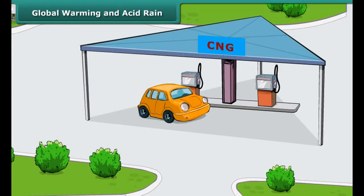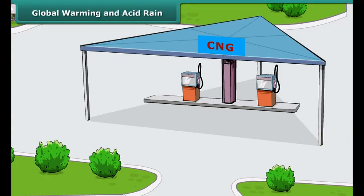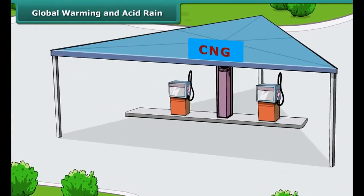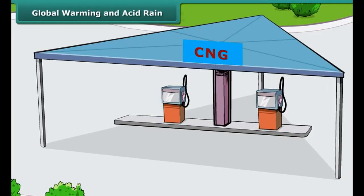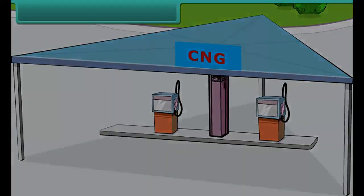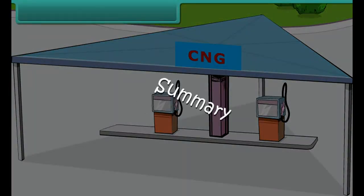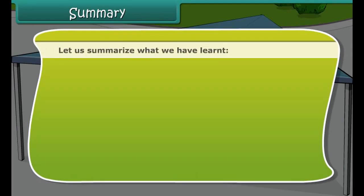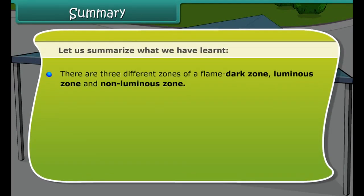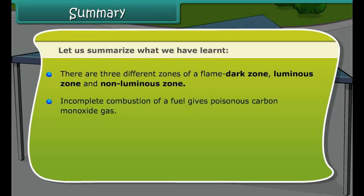Let us summarize what we have learned. There are three different zones of a flame: dark zone, luminous zone, and non-luminous zone. Incomplete combustion of a fuel gives poisonous carbon monoxide gas. An increase in the concentration of carbon dioxide in air results in the rise of Earth's temperature. Acid rain contains oxides of sulfur and nitrogen in dissolved state.